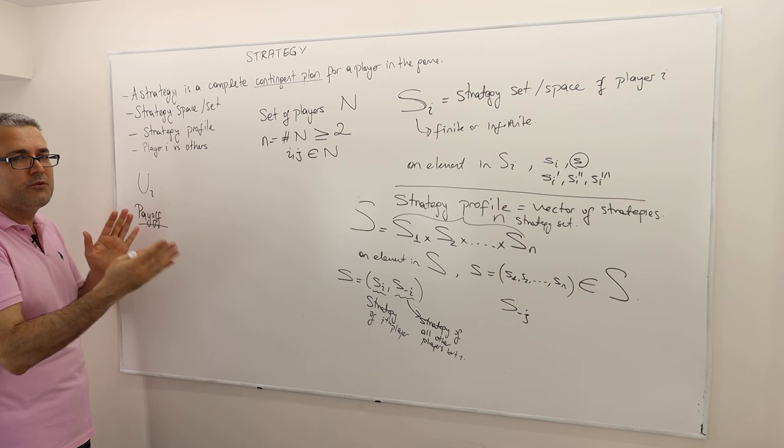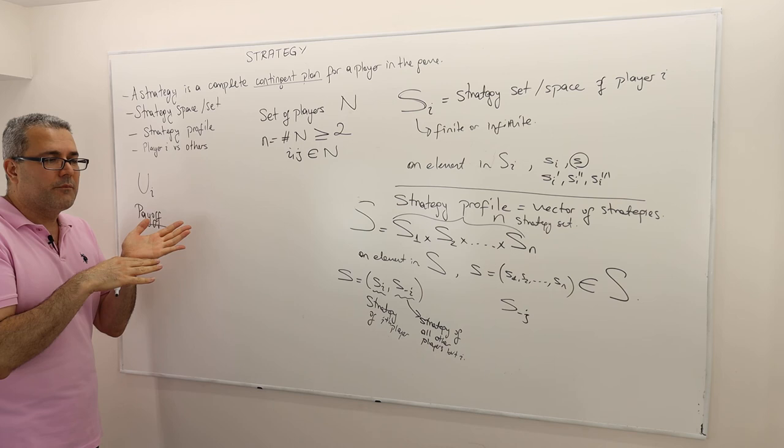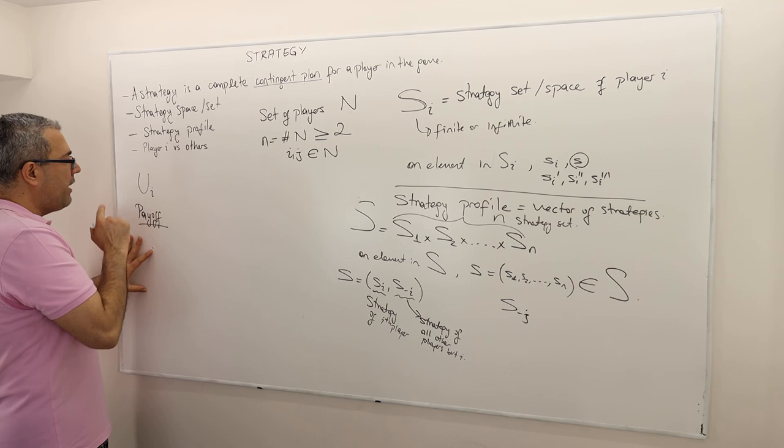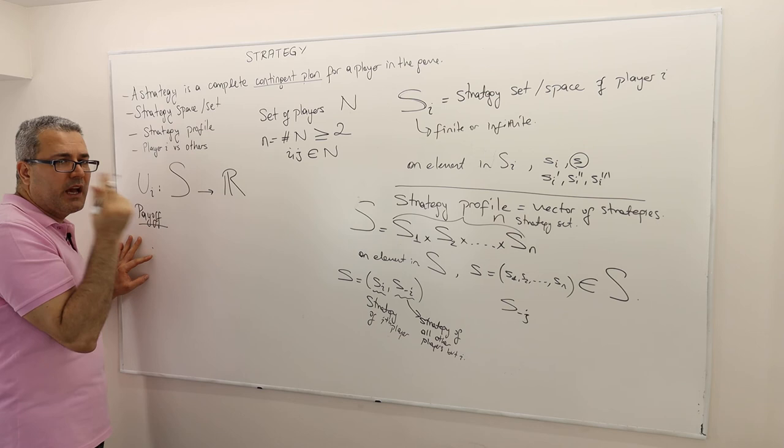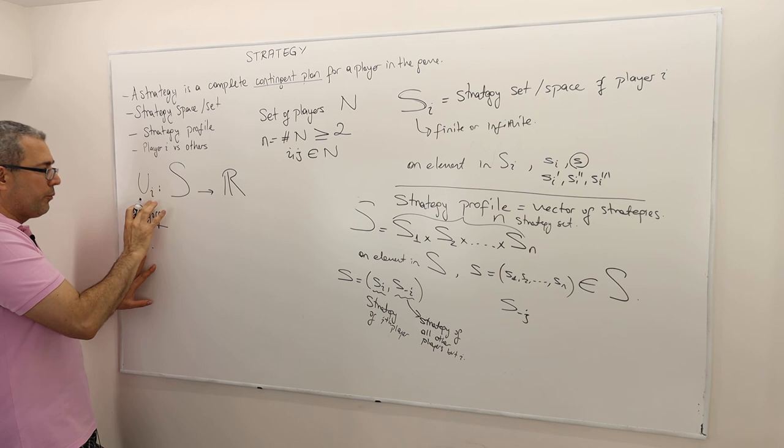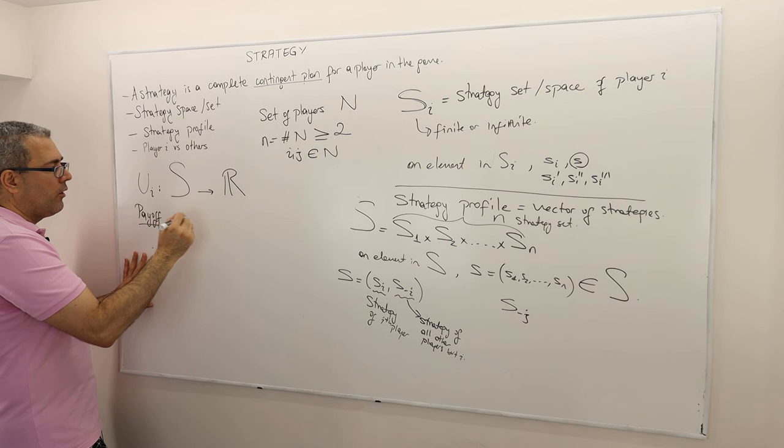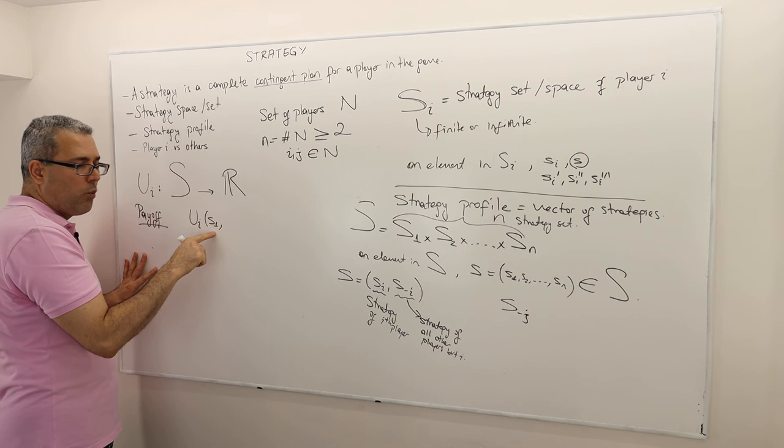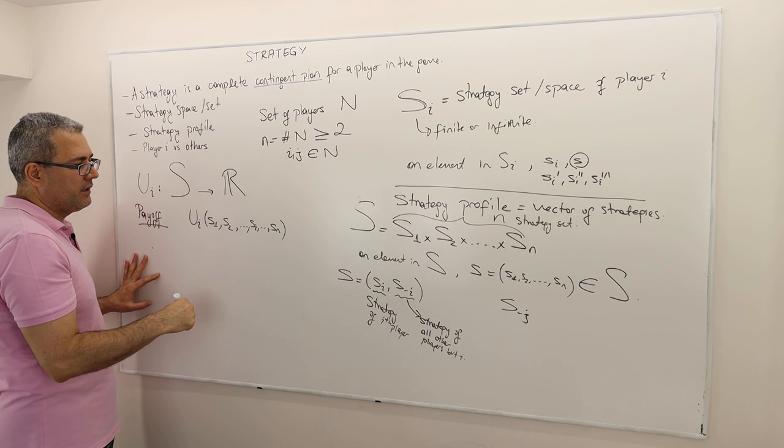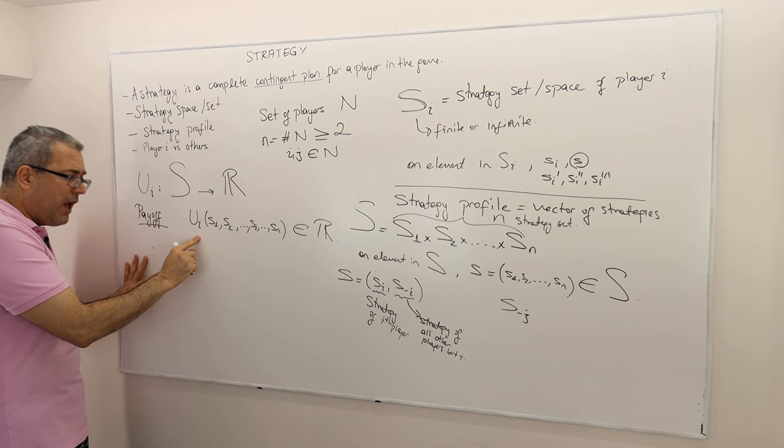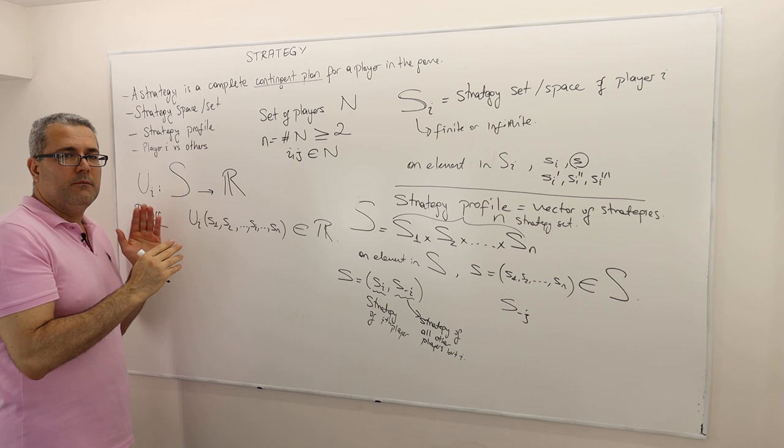Okay. So the utility, I'm sorry, but I keep using utility payoff back and forth. That's a confusion. I'm sorry, because I'm teaching game theory and micro theory at the same time. So the payoff function is in fact a function which maps the strategy profile into a real numbers. Positive, negative. I don't know. I don't care. So once again, a payoff function for player I maps every strategy profile to a real number.